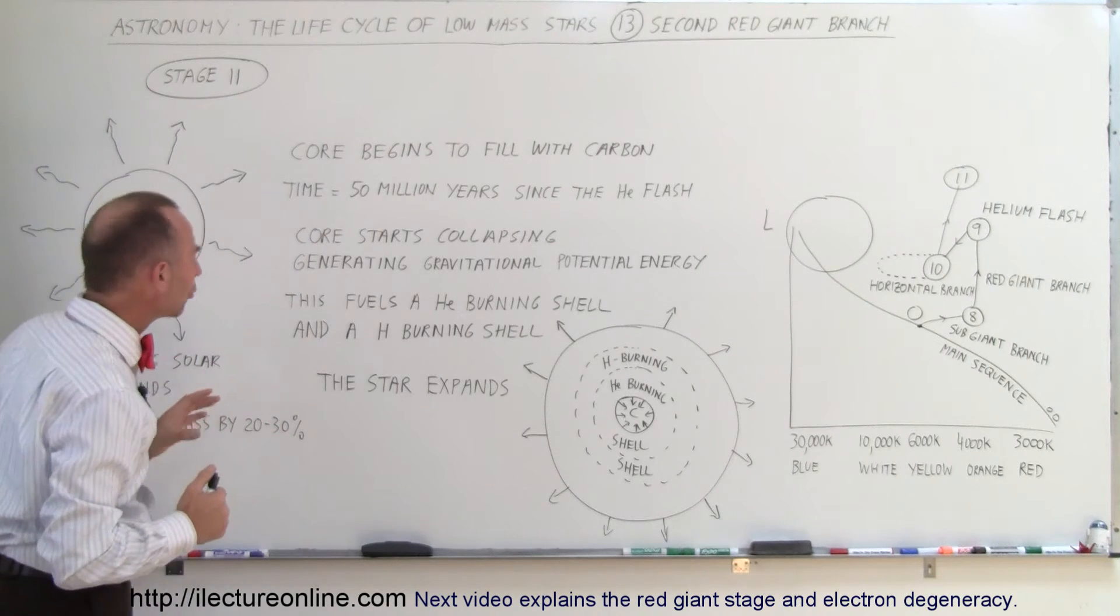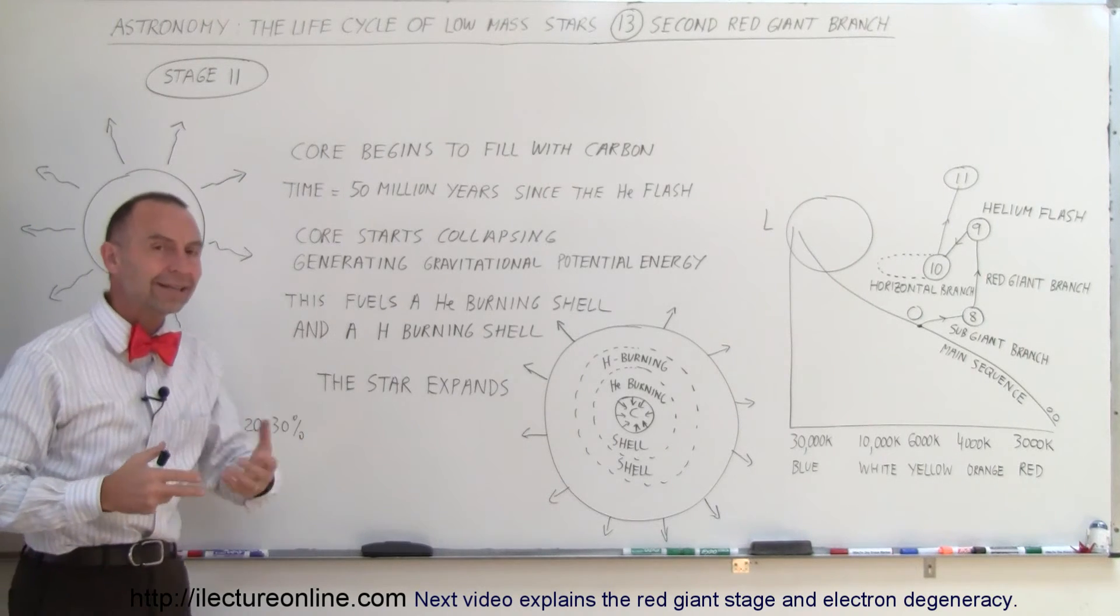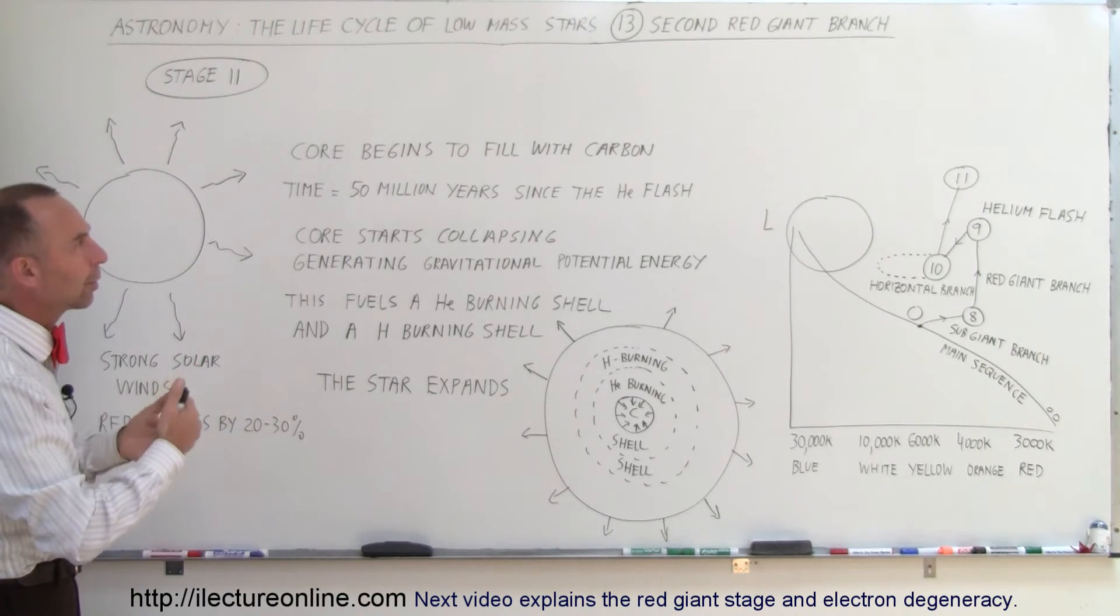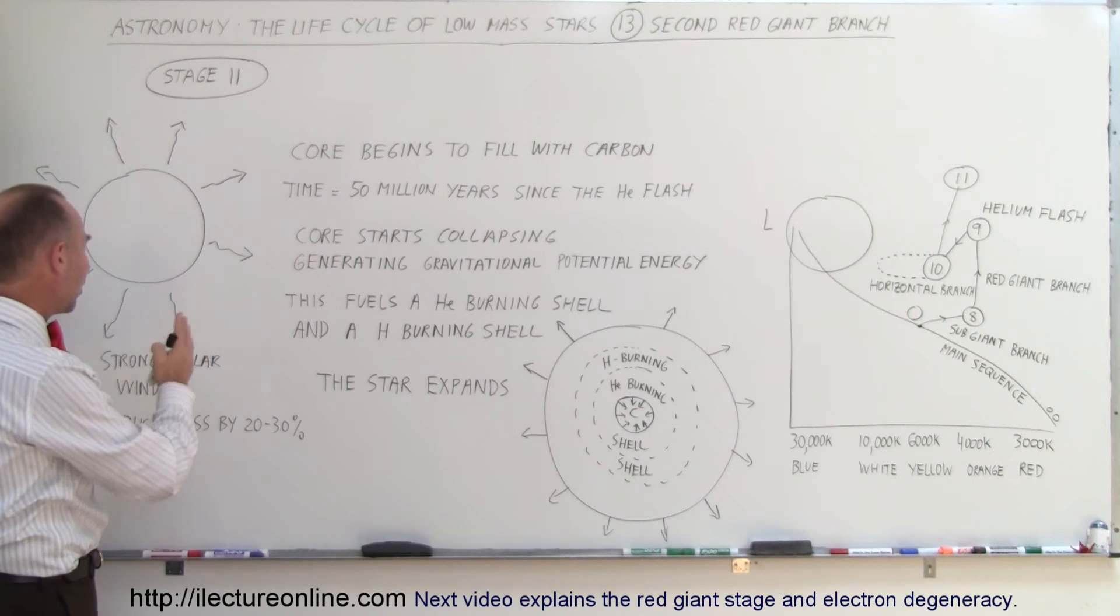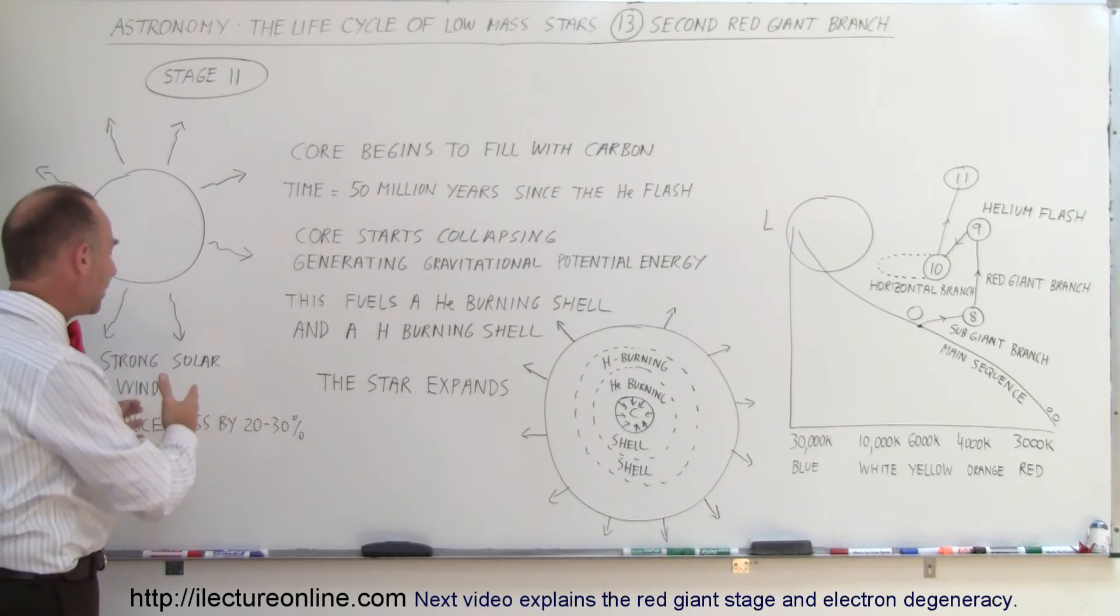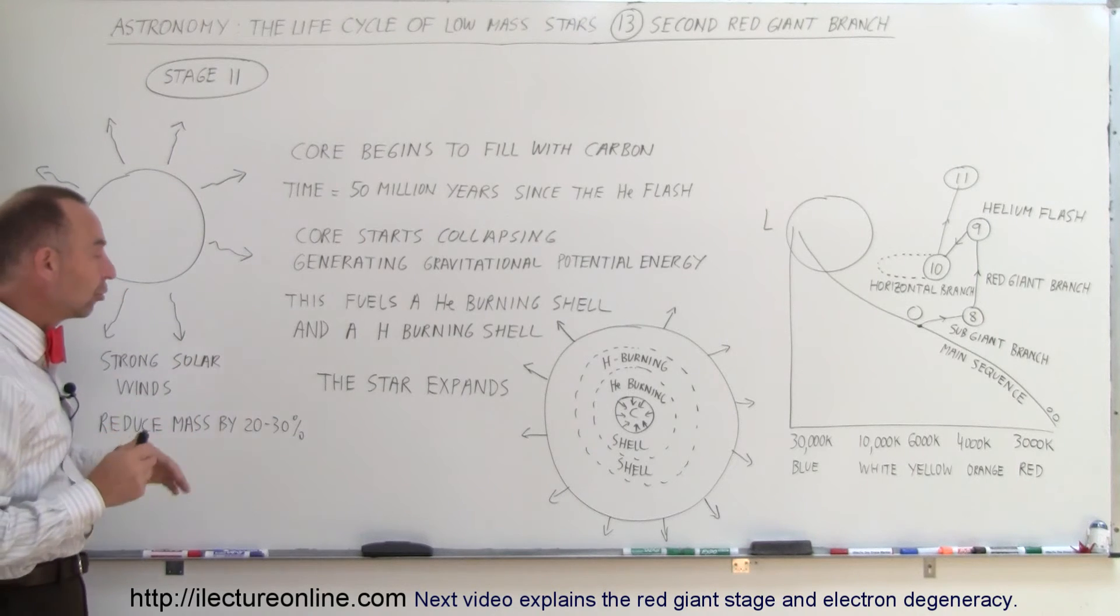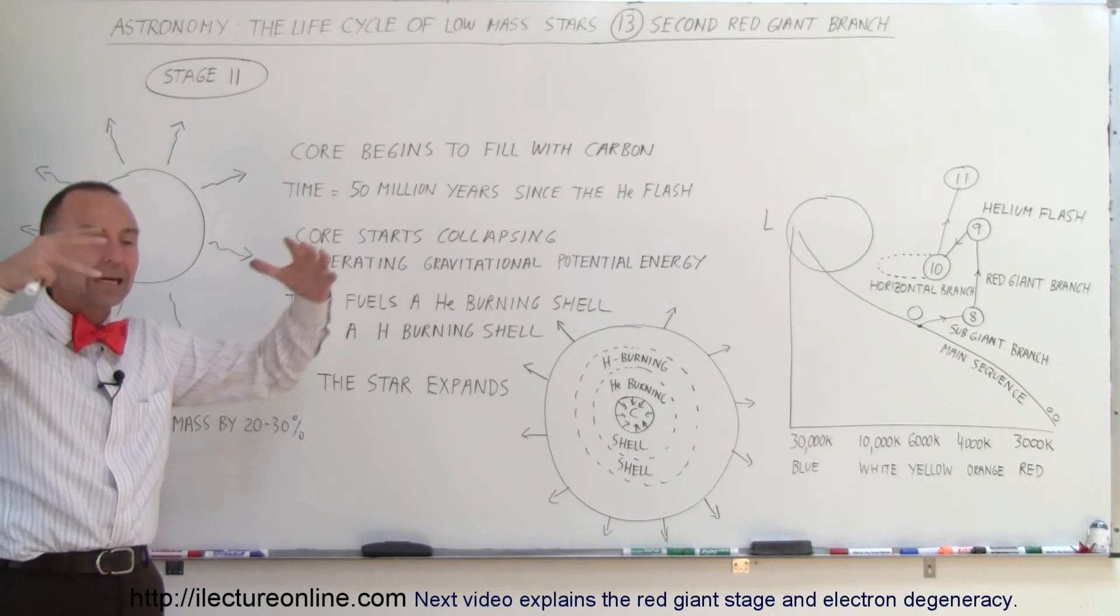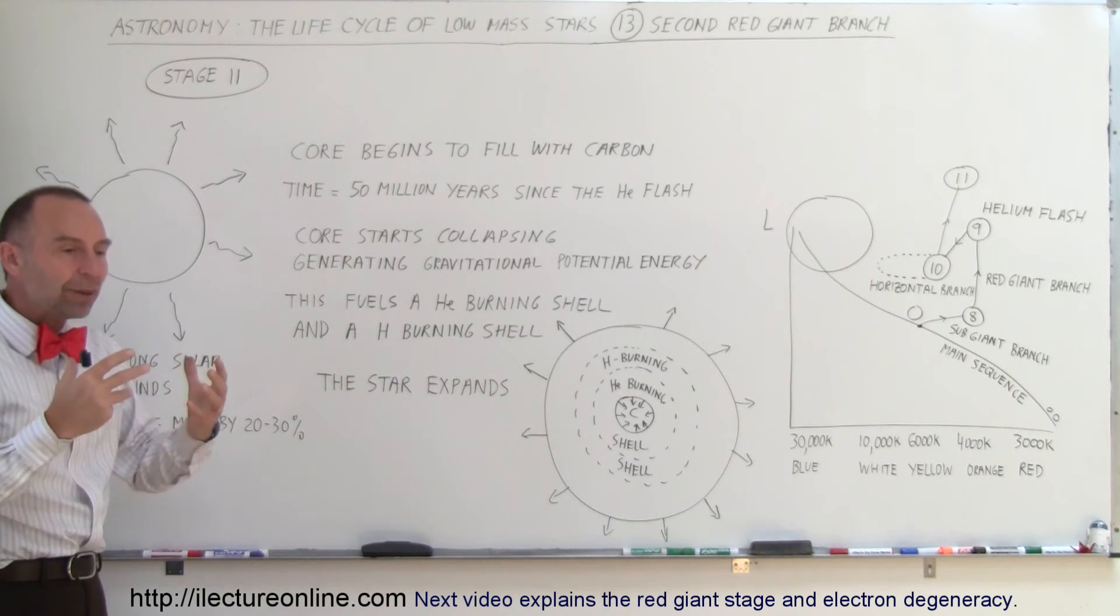Also during that period, the solar winds become very strong. As a red giant, as it grows to that second red giant branch stage, the solar winds really pick up and begin to carry off enormous quantities of the star's mass. The star in that stage can lose as much as 20 to 30 percent of its total mass by the solar winds, and not at high speeds but at very gentle speeds.